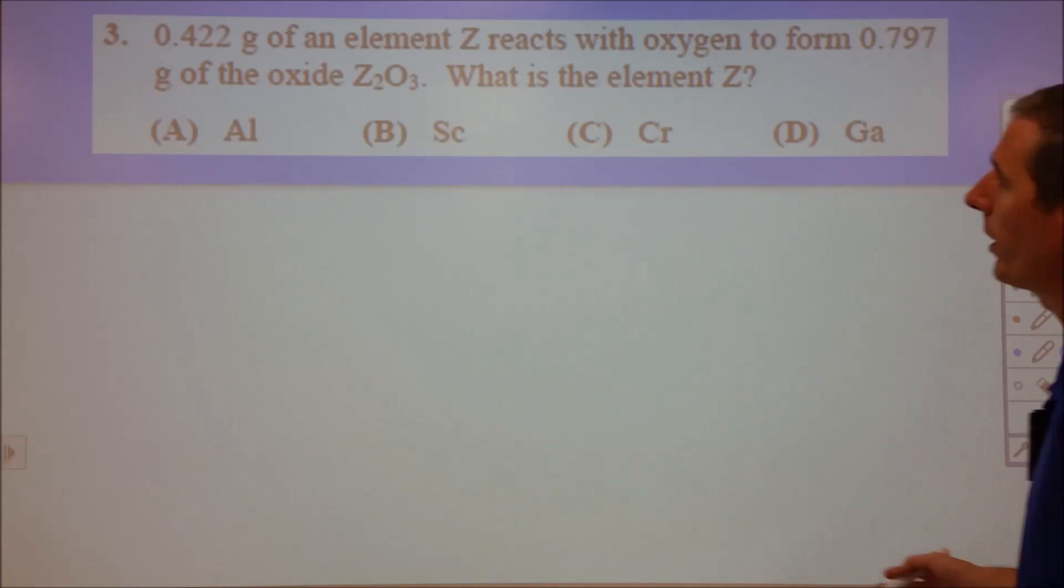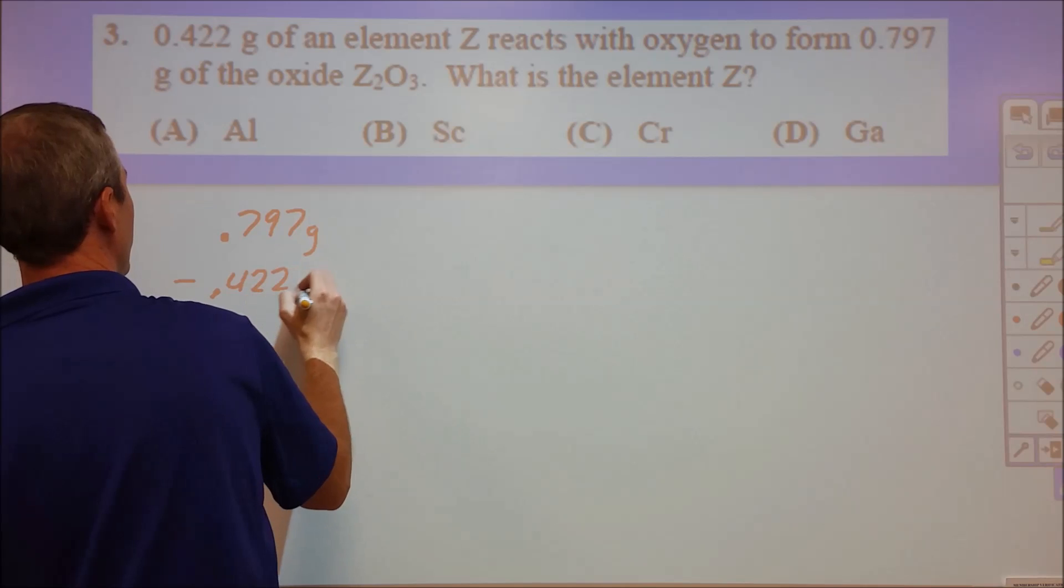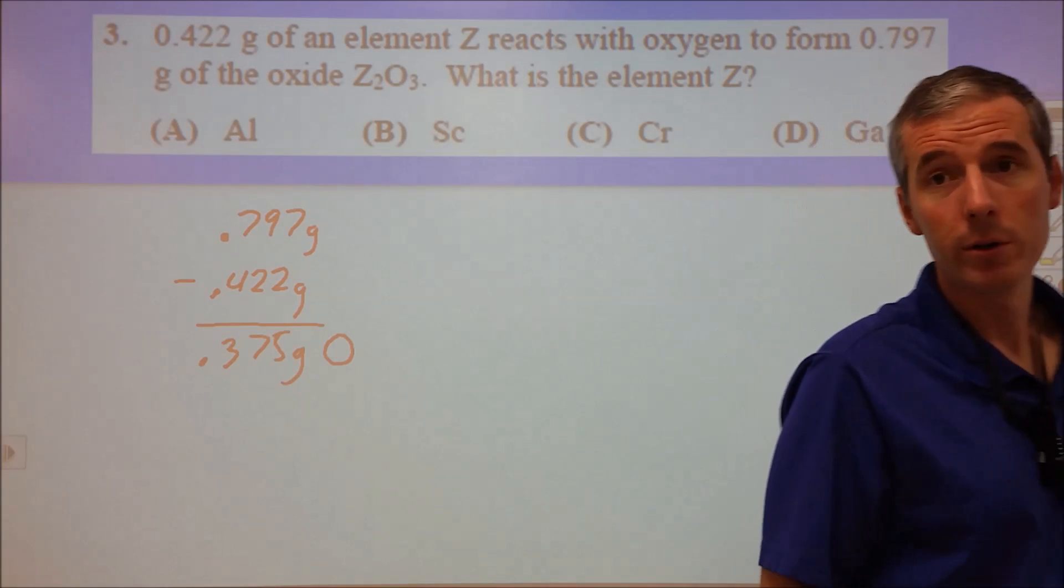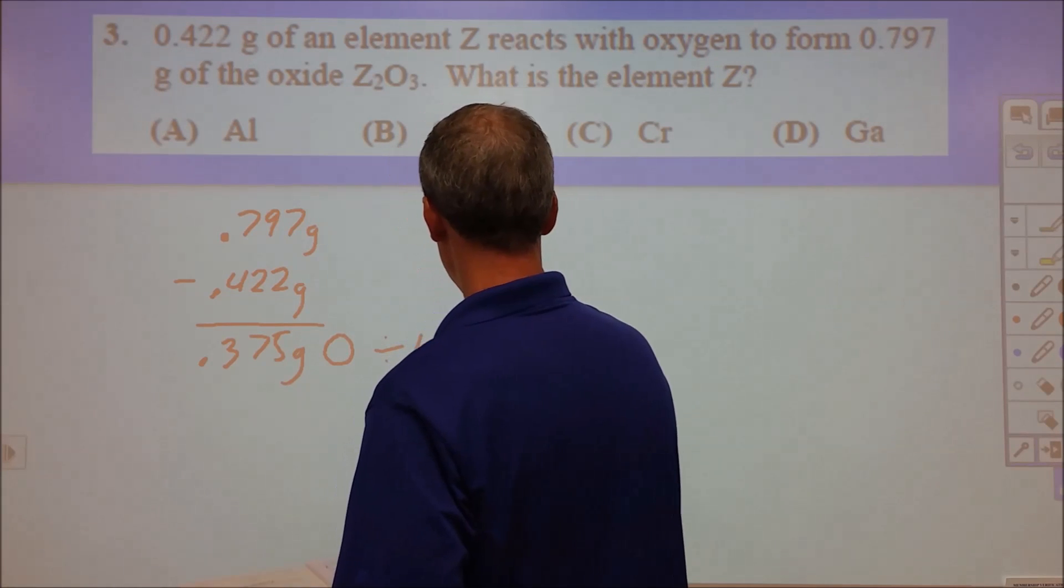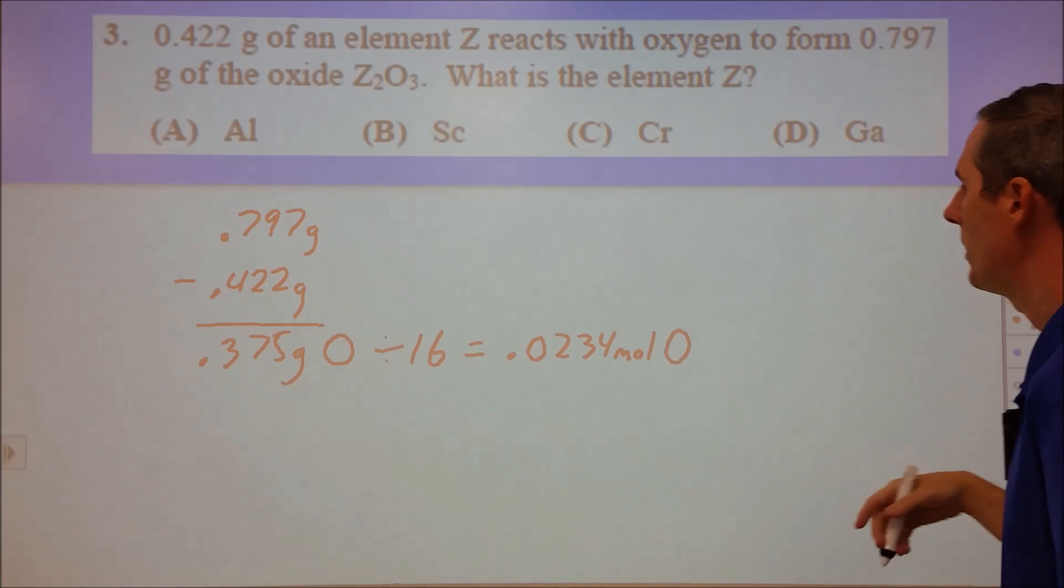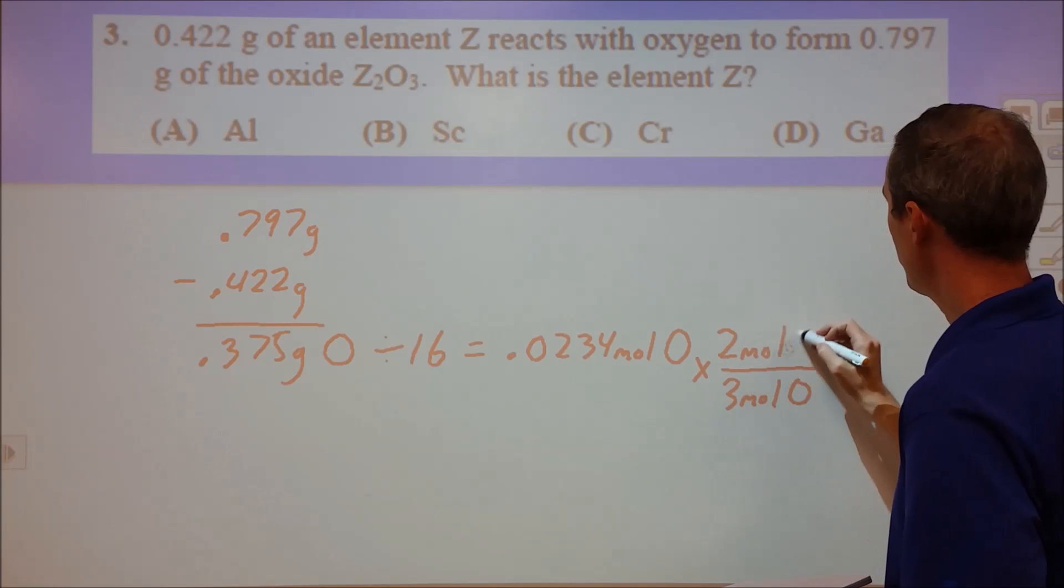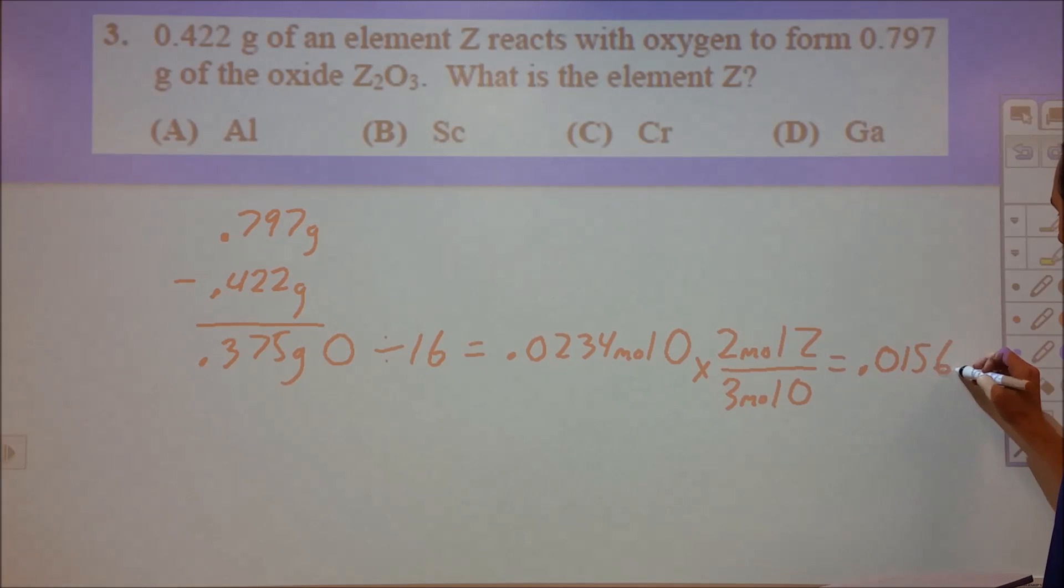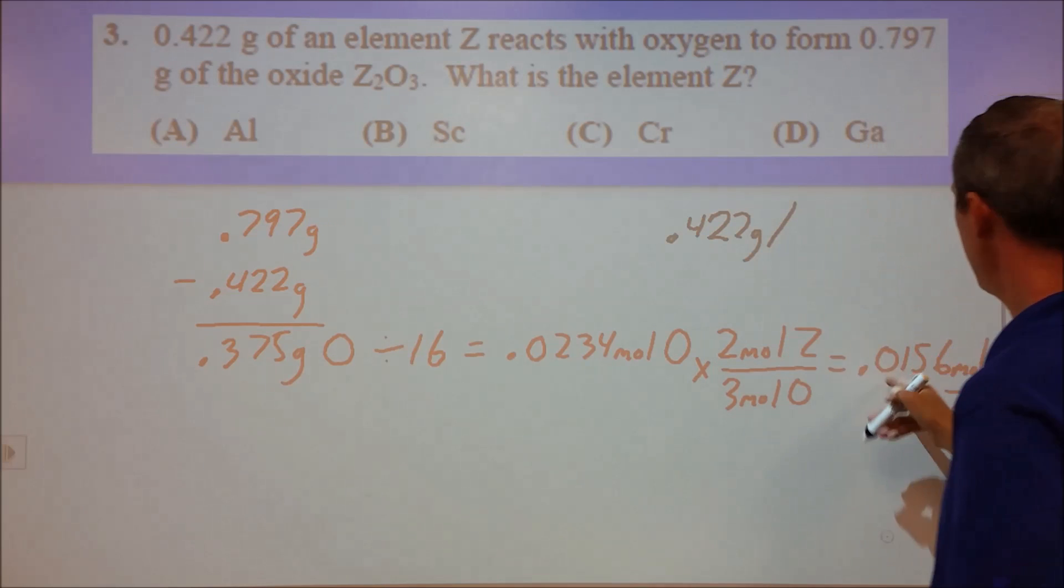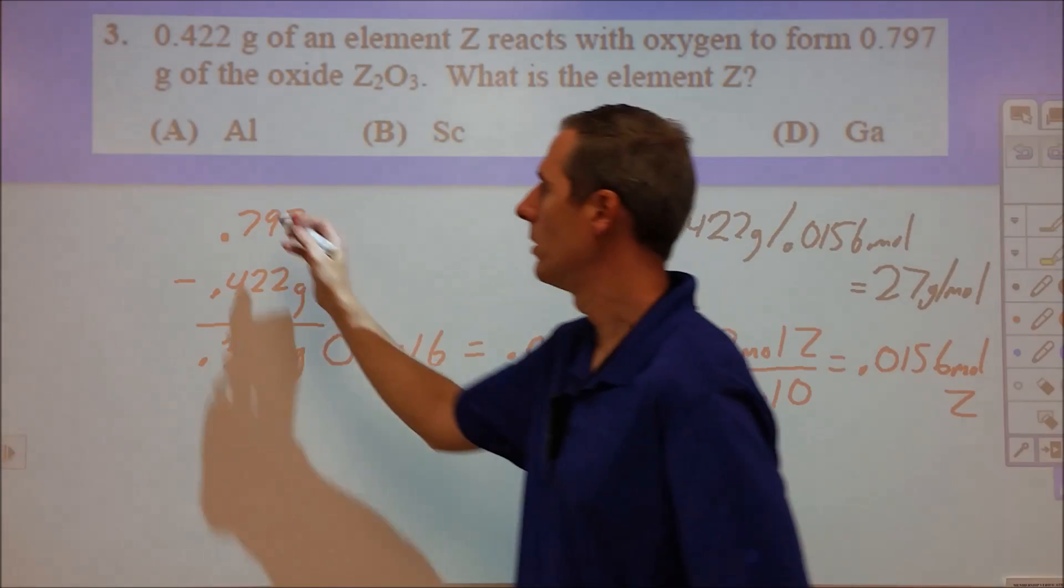Number three, a little trick but nothing too crazy. Take 0.797 grams of compound and subtract 0.422 grams of unknown element Z. That's 0.375 grams of oxygen. Convert to moles by dividing by 16, which gives 0.0234 moles of oxygen. The formula Z2O3 tells us three moles of oxygen correlate to two moles of Z, giving 0.0156 moles of Z. Divide 0.422 grams by 0.0156 moles to get a molar mass of 27, which is aluminum. Answer is A.